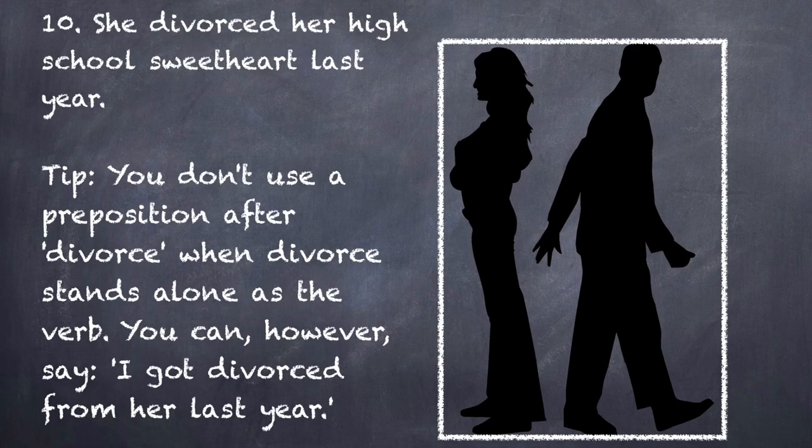Sentence number ten: She divorced her high school sweetheart last year. This mistake is similar to the last one we covered. You don't use a preposition after 'divorce' when it stands alone as the verb — I divorced her last year. You can, however, say 'I got divorced from her last year.'